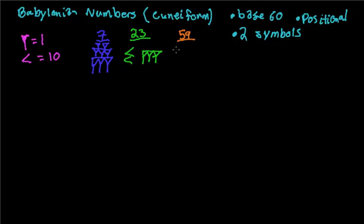To draw 59, we would draw 5 of the tens symbols, and then we would need 3 stacks of 3 for our ones place. So this number right here is 59.